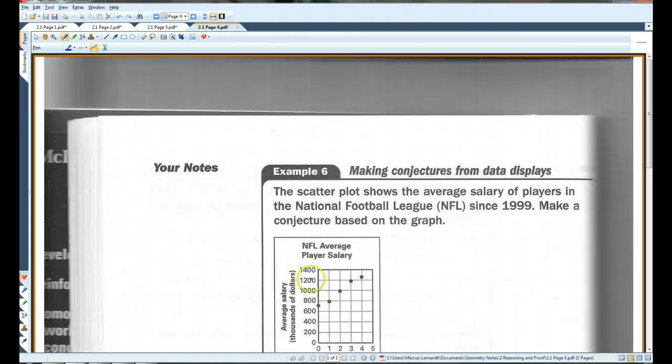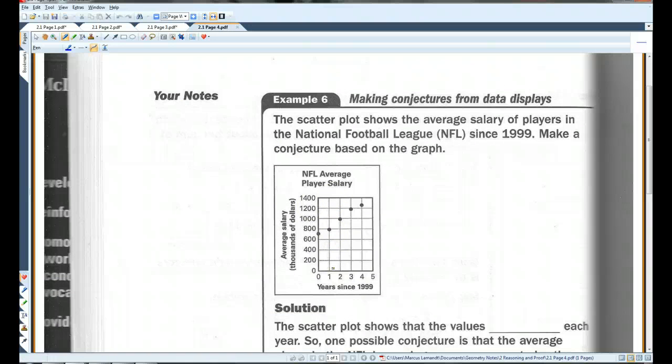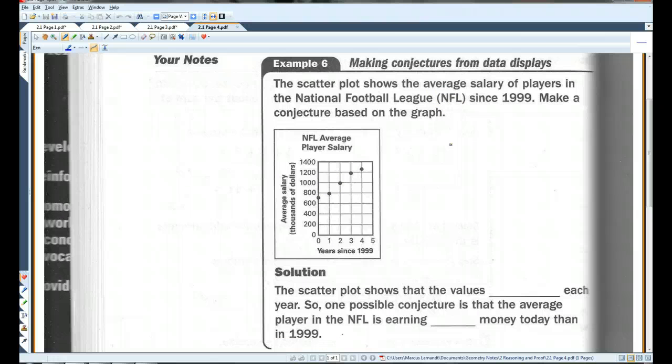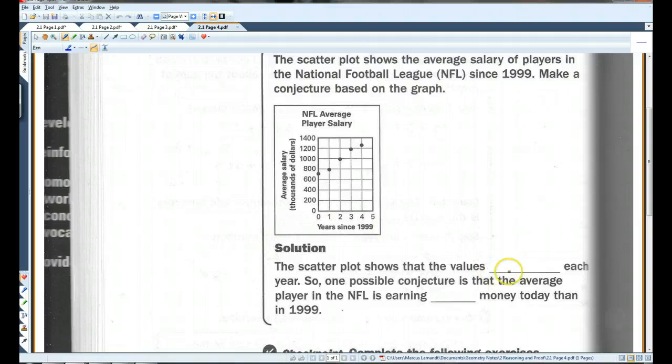Page four. Making conjectures from data displays. The scatter plot shows the average salary of players in the NFL since 1999. Make a conjecture based on the graph. So, it looks like their salaries are going up since 1999. The scatter plot shows the values increased each year. So, one possible conjecture is that the average player in the NFL is earning more money today than in 1999. There's a conjecture, and it's probably true.